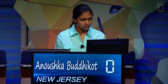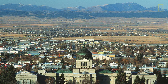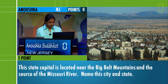Anoushka. This state capital is located near both the Big Belt Mountains and the source of the Missouri River. Name this city and state. Helena, Montana. That is correct.